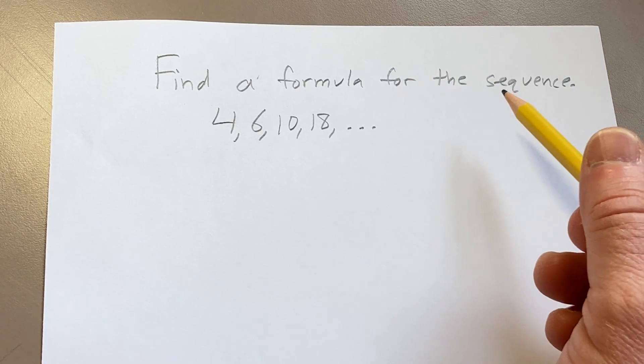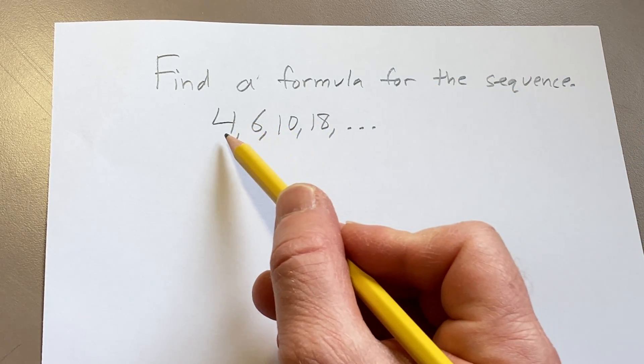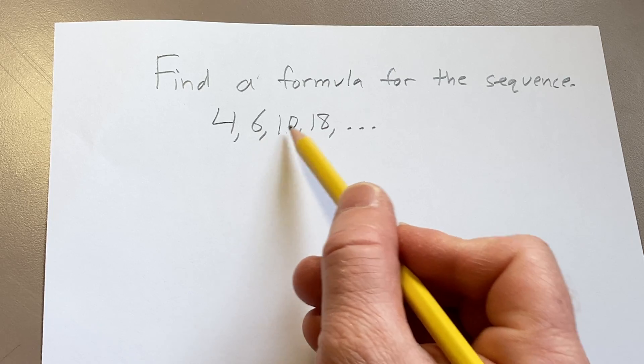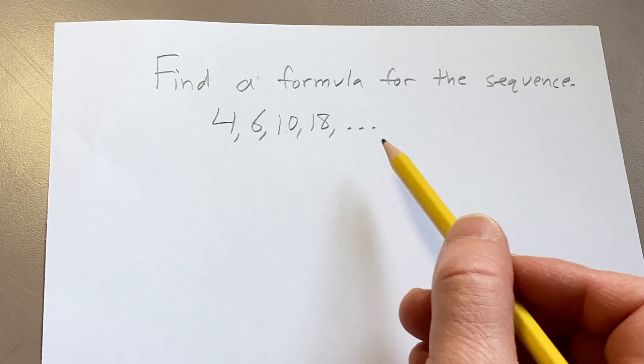Hi, in this video we're going to find a formula for the sequence, the terms of which are 4, 6, 10, 18, etc. Three dots means that it goes on forever.